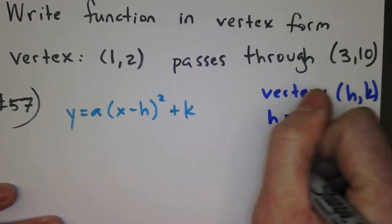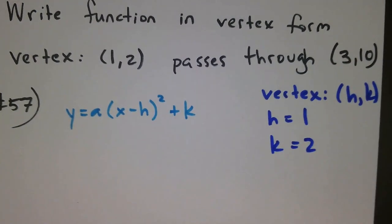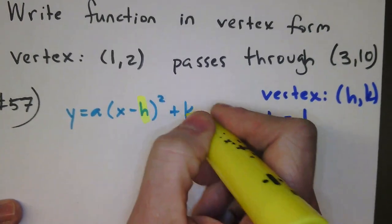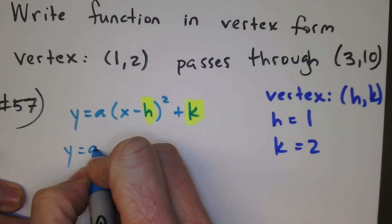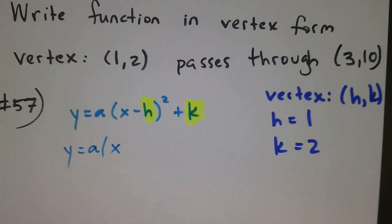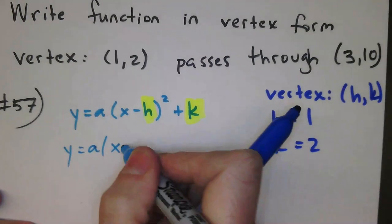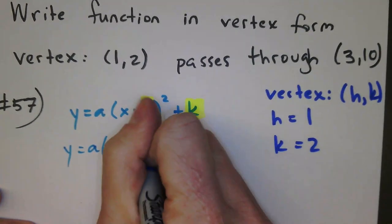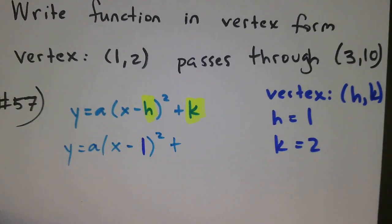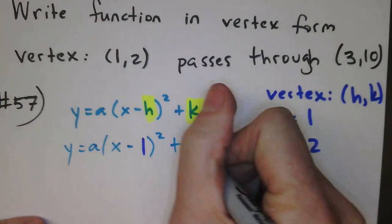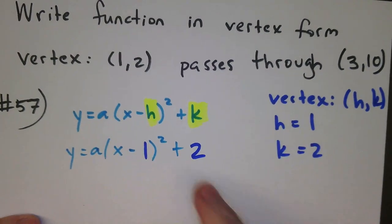then my h value is 1, and my k value is 2, which means I can replace h and k with those numbers. So I'll do that first, and that's going to give me y equals a times x minus, I've got an h value, h value is 1, squared plus my k value here is 2. So these two numbers just went in for h and k.